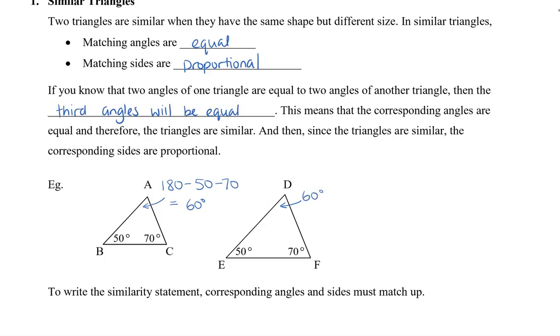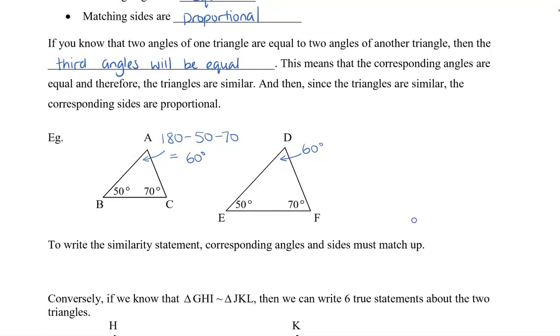So this means that the corresponding angles, or the matching angles, are equal. Because they are equal, that means that these two triangles ABC and DEF are similar.